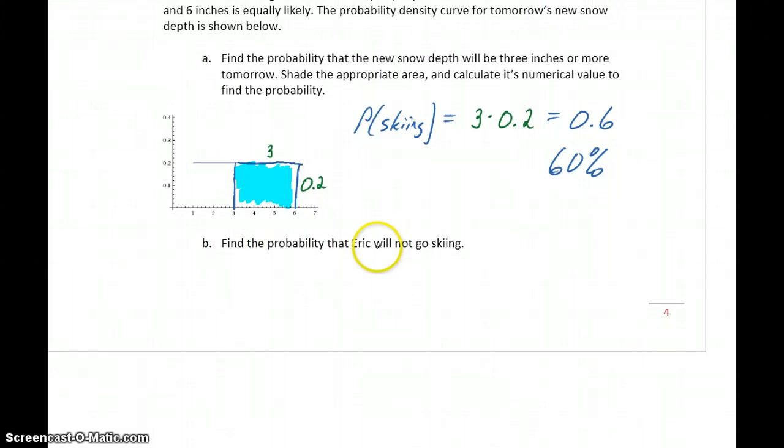In part B, we want to find the probability that he won't go skiing. So not skiing is, again, the complement of skiing. So one way to calculate this would be to find the complement. So we take 1 minus the probability that he does go skiing. So 1 minus 0.6 or 0.4, 40%.